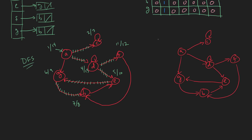Let's do breadth-first search. We have a queue — here's our Q. First, it's empty. We're going to start at A — its distance is zero, so we put A in the Q. We take A out of the Q and put its adjacency list on, all at a distance of one. So we have C, D, and G. We take C off — C points to itself, so we don't put anything else on the Q.